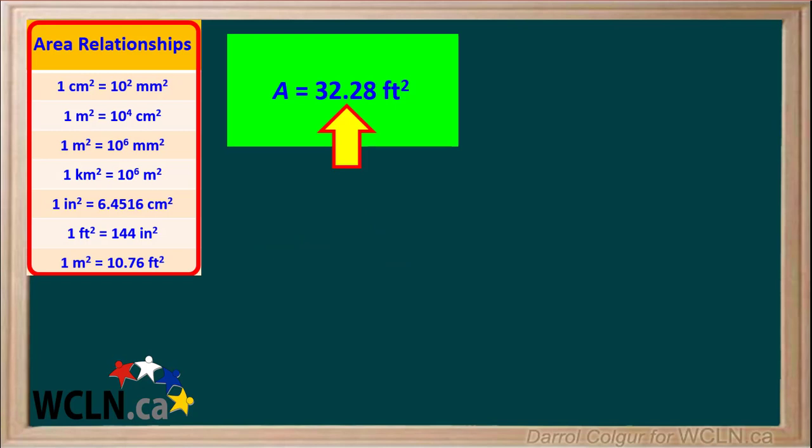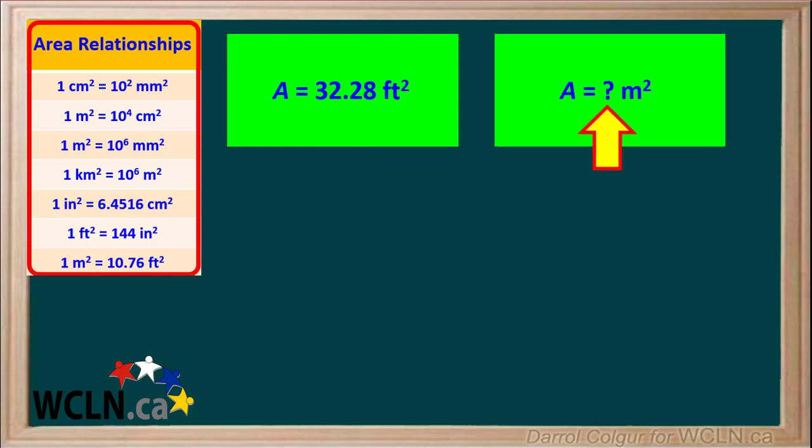We have a rectangle with an area of 32.28 square feet. And we want to convert its area to square meters. We can use the relationship that 1 meter squared is equal to 10.76 feet squared to make a conversion factor.